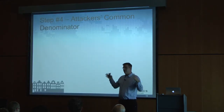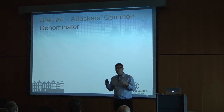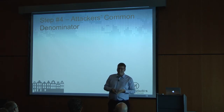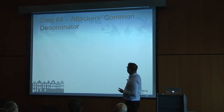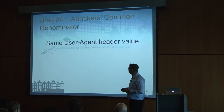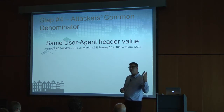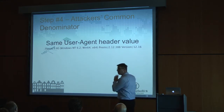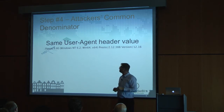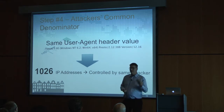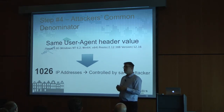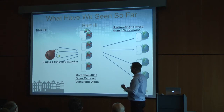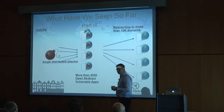Step number four: we have a big story with a lot of data. Up till now we were doing zoom out; now we want to zoom in and look for a common denominator. Something common to all those 1,000 IP addresses was the user agent header value — the actual value was the same across all those IP addresses. That led us to believe those 1,000 IP addresses are actually one attacker abusing many IPs across the internet — a single distributed attacker.